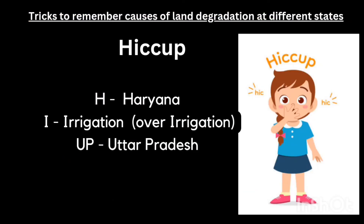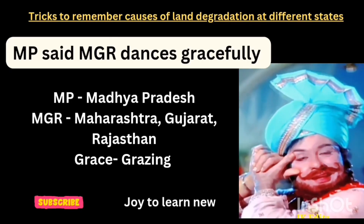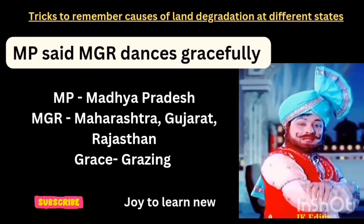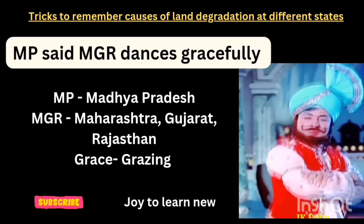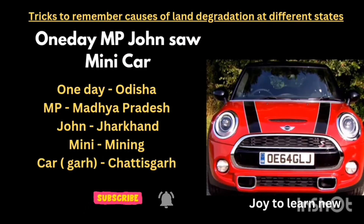Let's sum up the shortcuts once again: HICCUP — over-irrigation in Haryana, Uttar Pradesh, and Punjab. MPZ MGR dances gracefully — overgrazing in Madhya Pradesh, Maharashtra, Gujarat, and Rajasthan. One day MP John saw minicar — mining and quarrying in Odisha, Madhya Pradesh, Jharkhand, and Chhattisgarh.